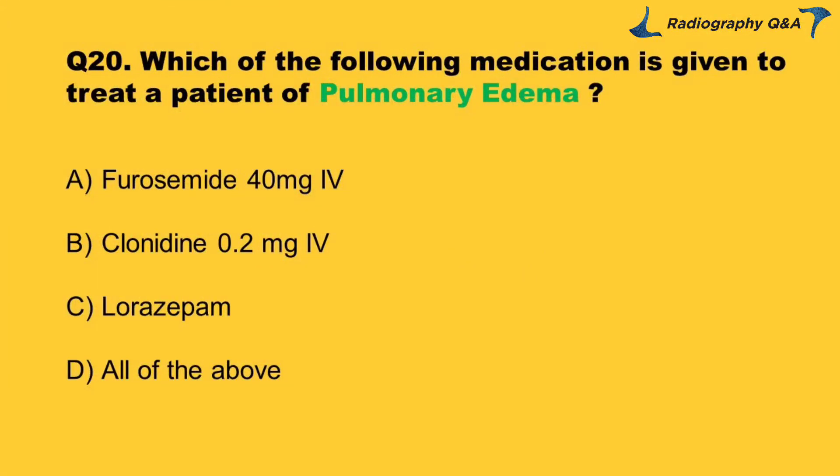Question 20: Which of the following medications is given to treat a patient with pulmonary edema? Option A: furosemide 40 mg IV. Option B: clonidine 0.2 mg IV. Option C: lorazepam. Option D: all of the above. Right answer is Option A.